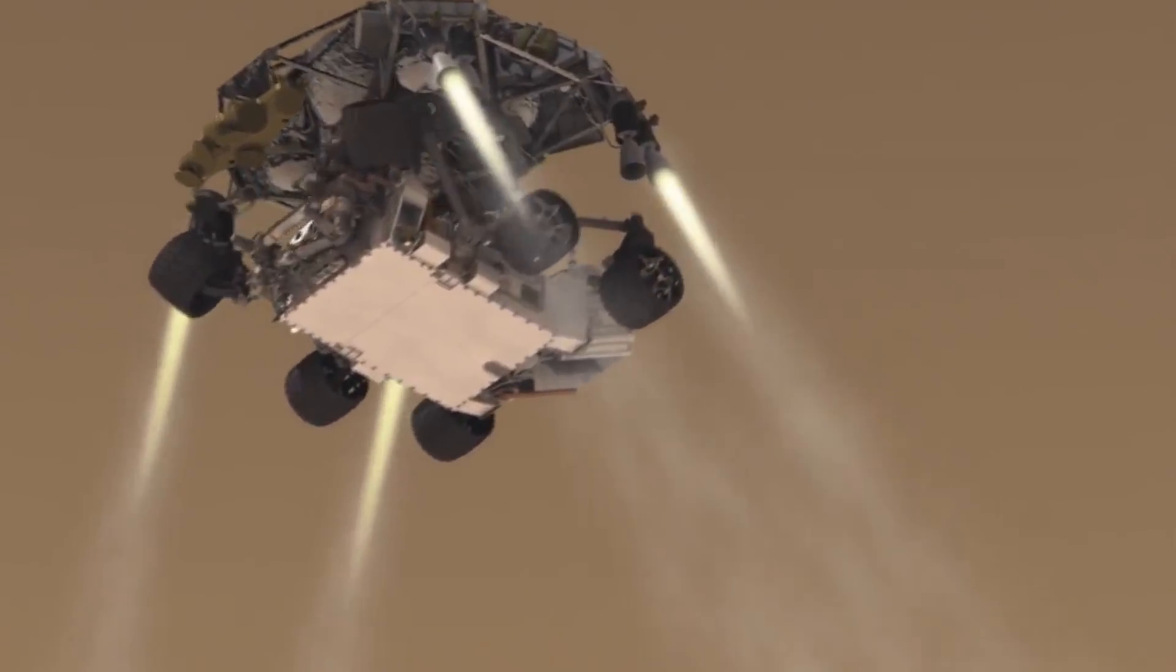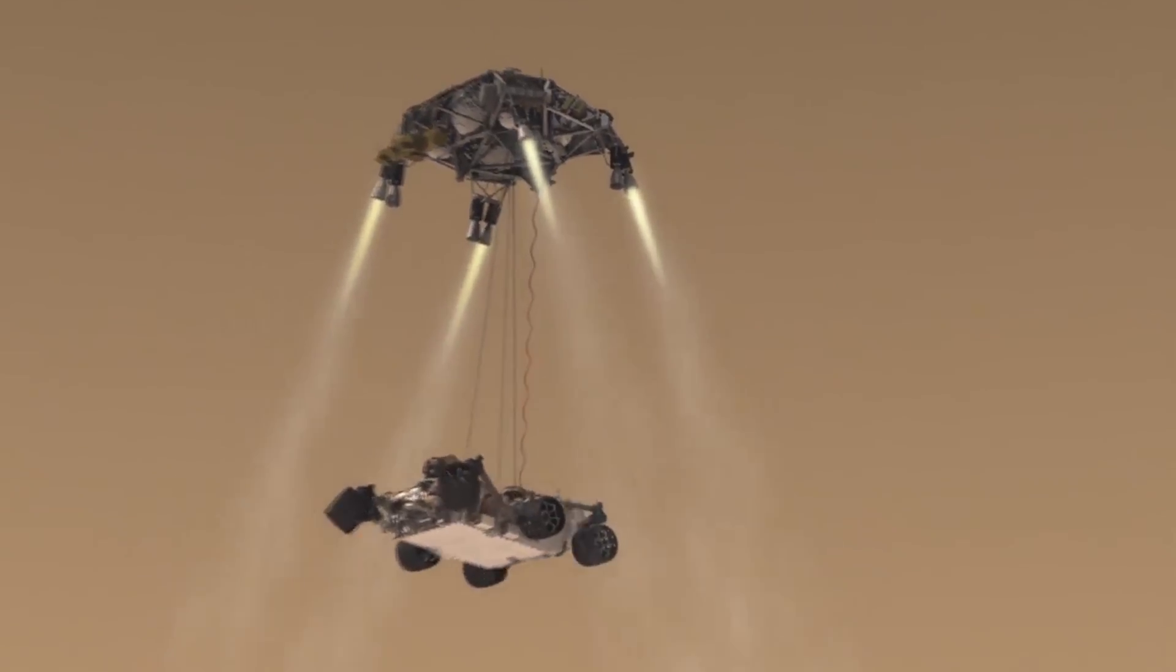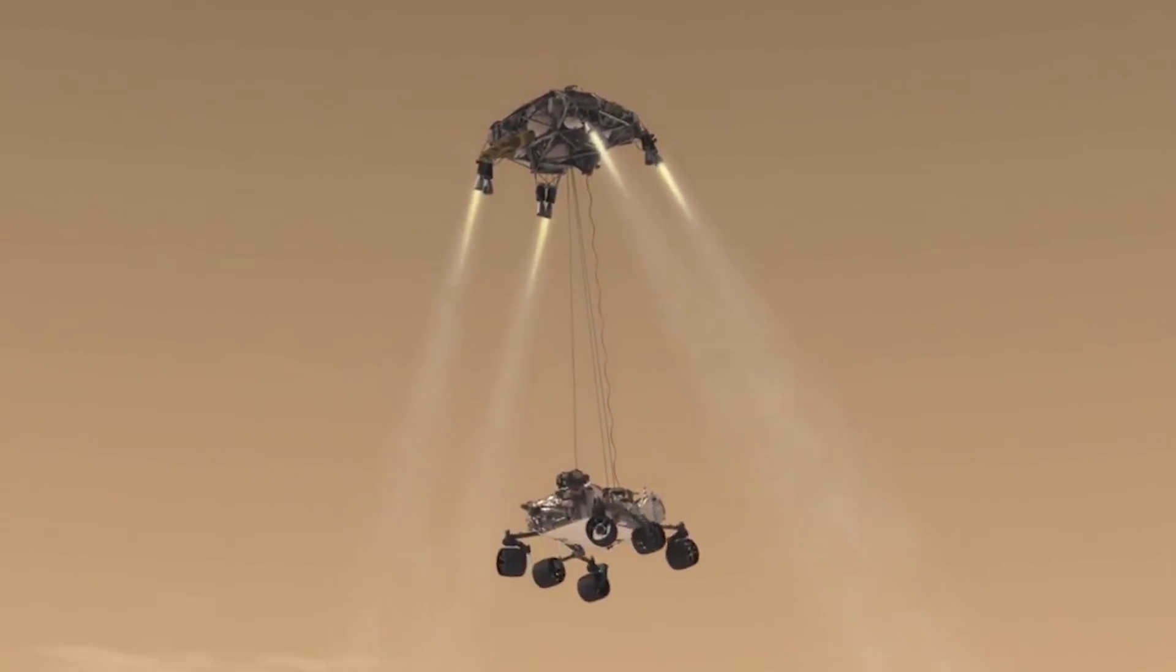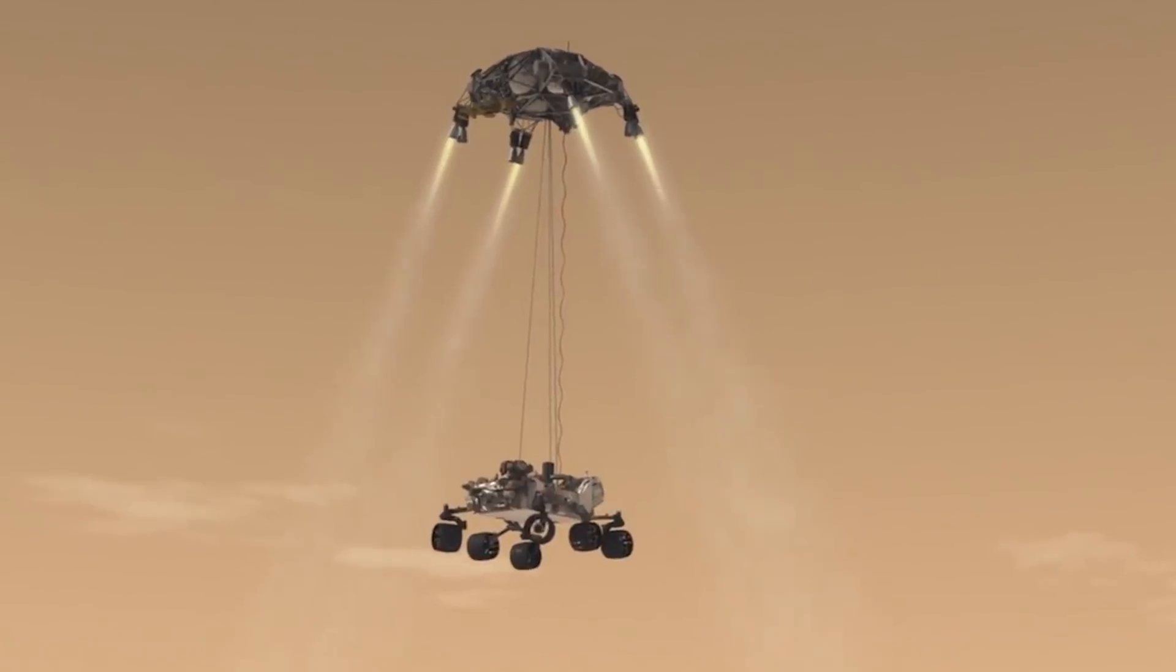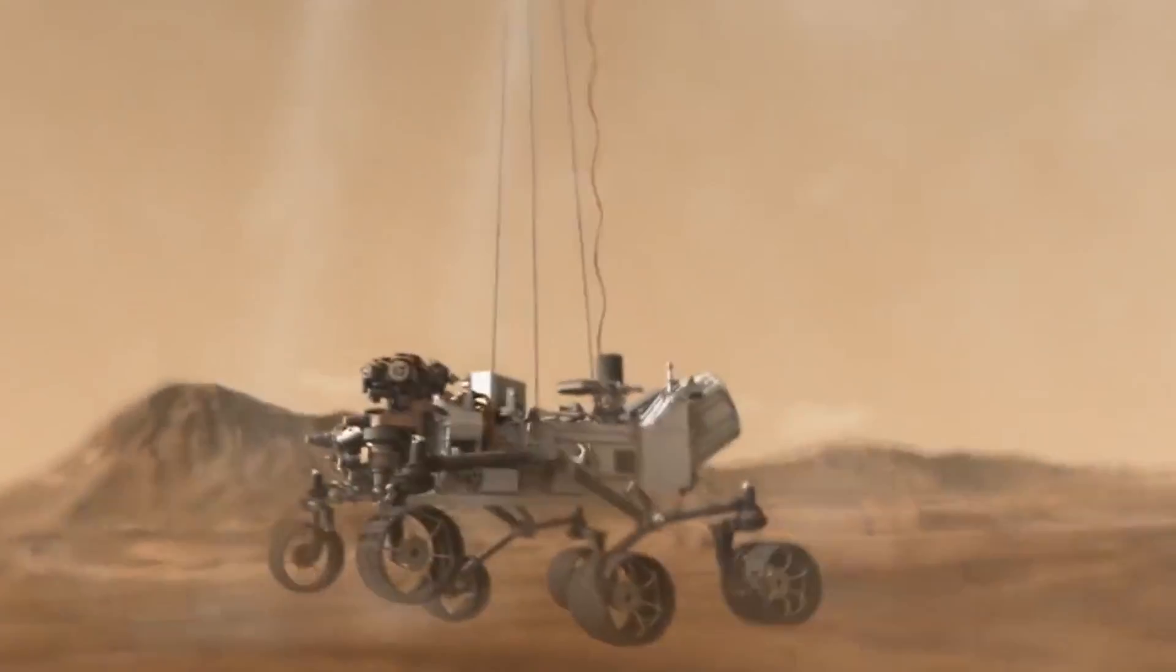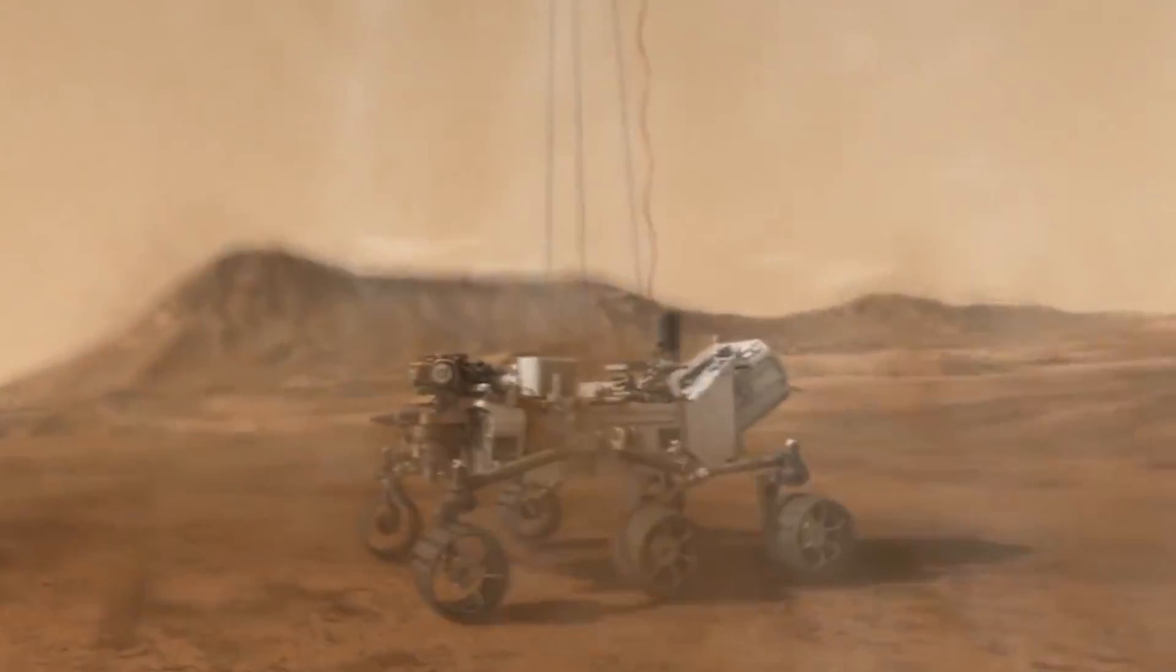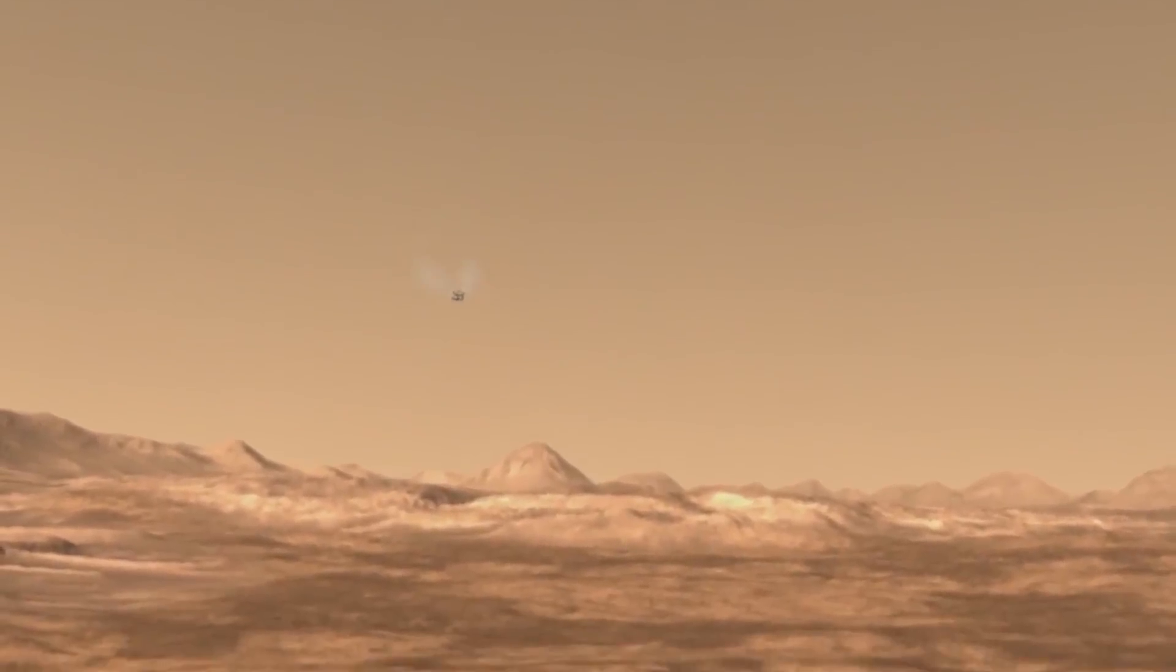Right when the tension in that rope started to give, which meant Curiosity was on the ground, it detached the tether and the sky crane flew away to a safe distance, leaving Curiosity by itself on the surface of Mars with no lander and no crane attached to it.